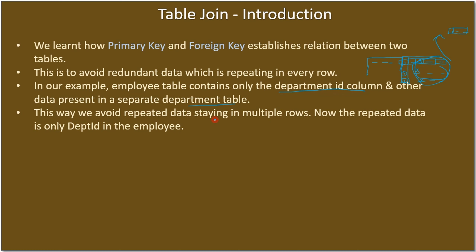Now the repeated data is only the department ID in the employee table. But if you want to bring the data together — say, employee ID, employee name, and department name — the department name is not available in the employee table when the data is split. What is available is only the department ID.